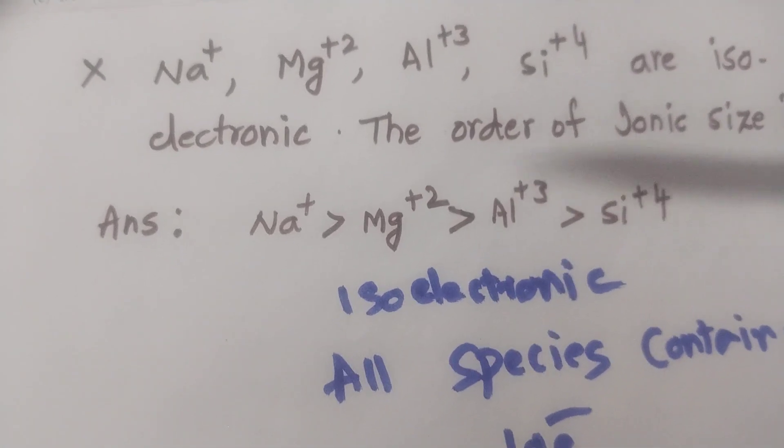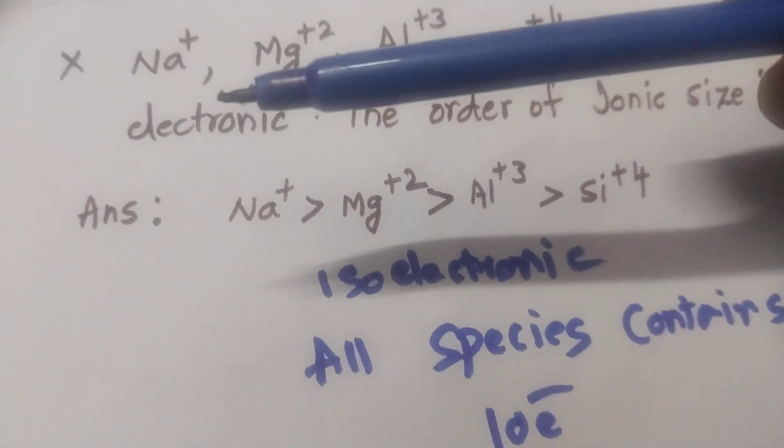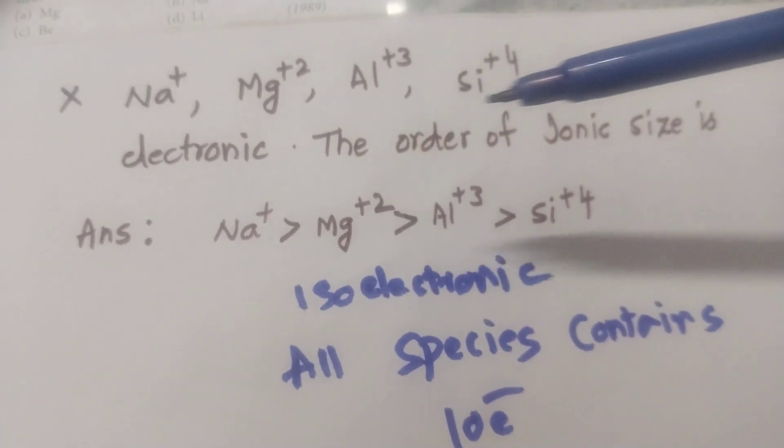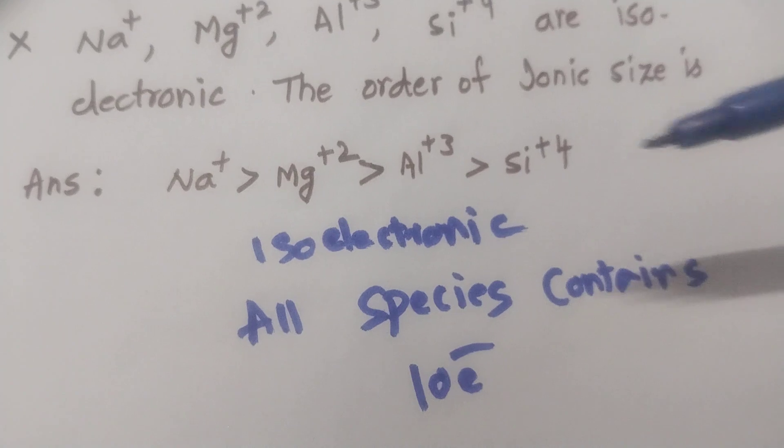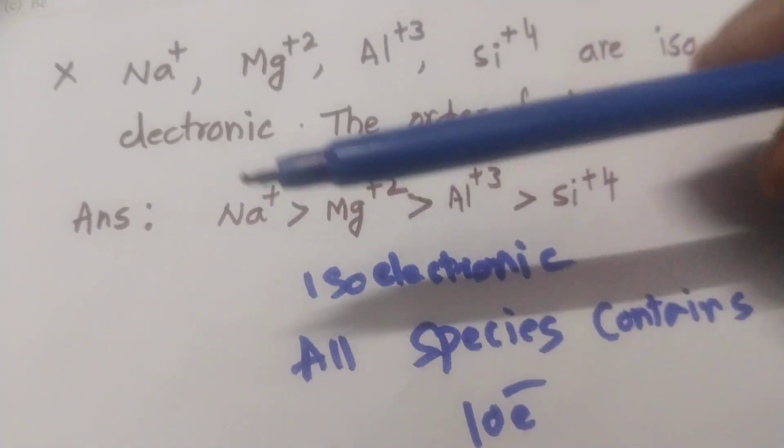My dear students, Competitive Chemistry 2024 NEET battle. Na+, Mg+2, Al+3, Si+4 are isoelectronic. The order of the ionic size. Very simple question for NEET aspirants.